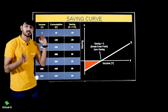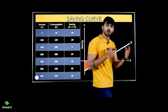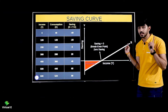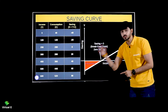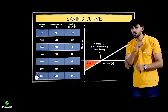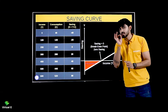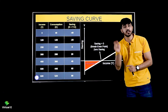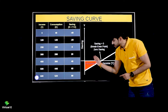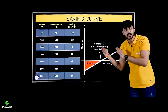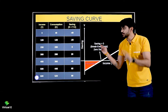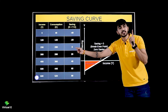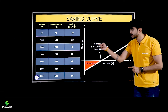Now let's see how to plot this on a graph. This is your savings graph. The saving curve will always start from negative. Why? Because at zero level of income, you are still doing consumption. Look — income is zero, consumption is 40, so savings is minus 40. That is the first phase: dis-saving, where savings is negative. The second phase is where saving is zero, meaning consumption equals income.